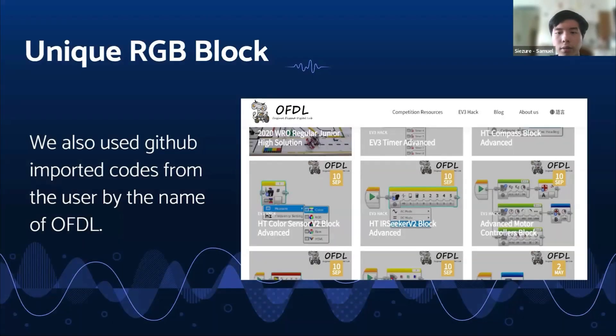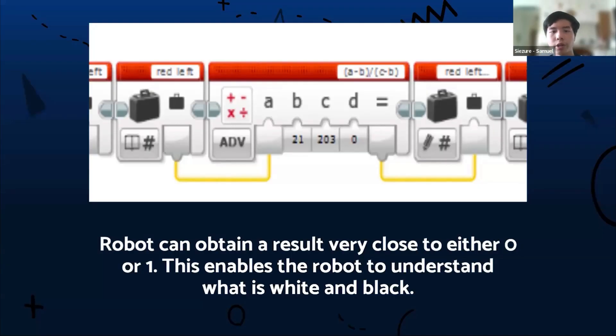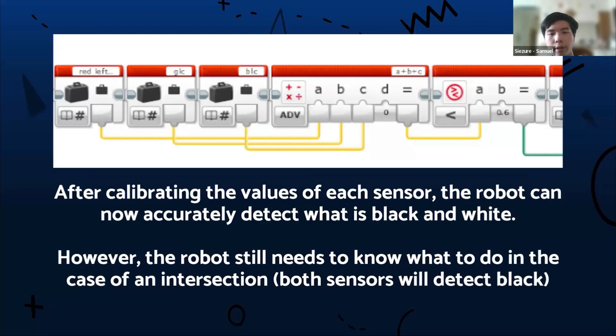The RGB block was actually not part of EV3 Mindstorms, so we had to use custom coded ones because the EV3 Mindstorms block was not accurate enough. By going through this equation, it's able to obtain a result very close to either zero or one. This enables the robot to understand what is white and black. After calibrating the values of each sensor, the robot can now accurately detect what is black and white.